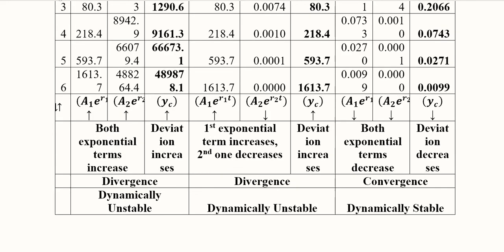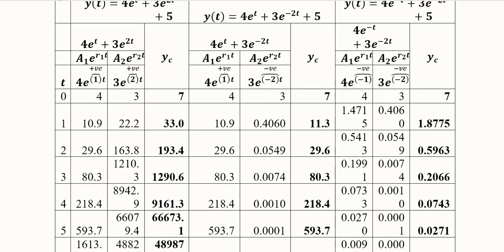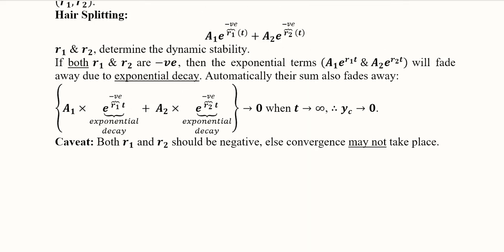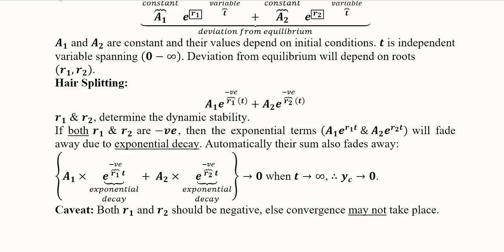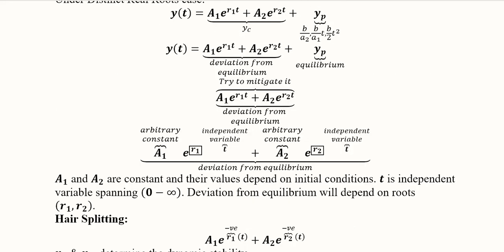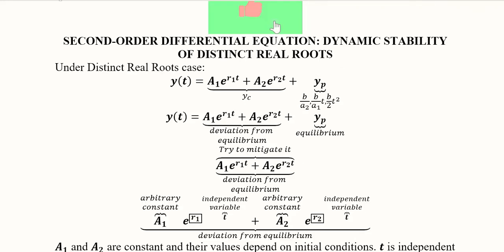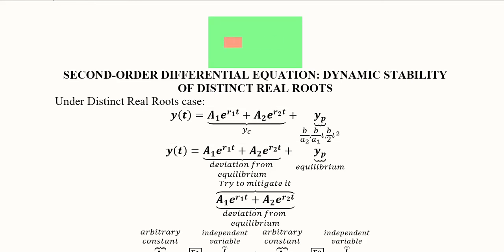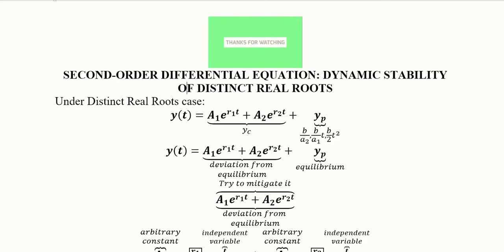This is verified: for dynamic stability in the distinct real roots case, both r1 and r2 must be negative. This numerical example demonstrates how divergence or convergence occurs, and how each part of yc plays a significant role in determining the dynamic stability of the second-order differential equation. In the next video, we will do the dynamic stability analysis of the repeated or equal real roots case.